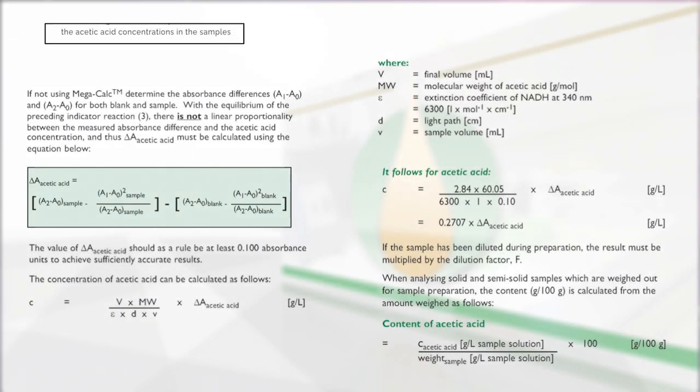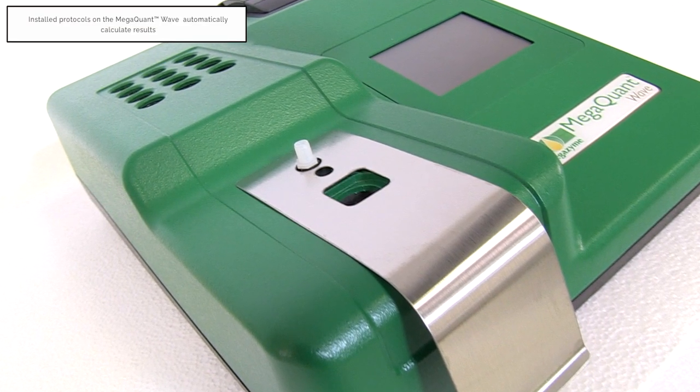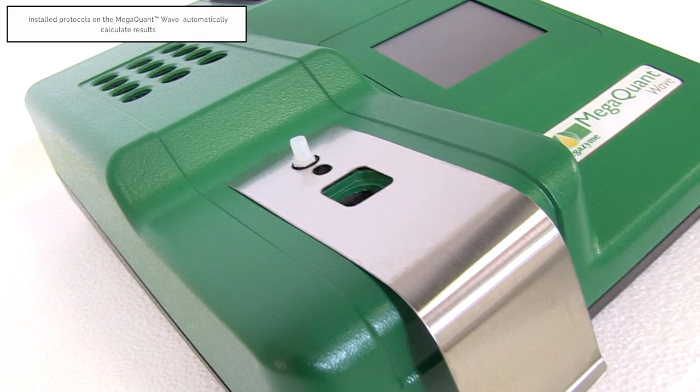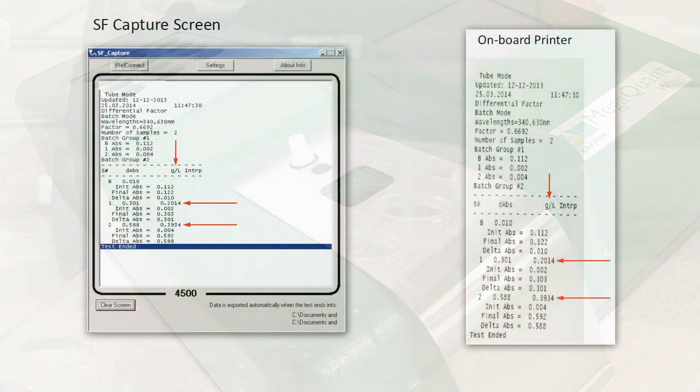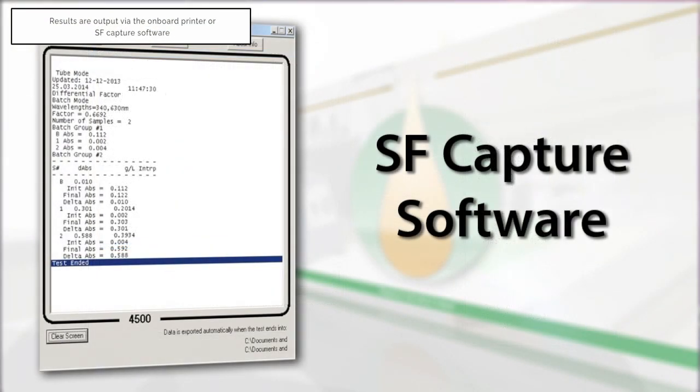The absorbance readings A0, A1, and A2 of the sample and blank reactions are used to calculate the acetic acid concentrations in the original samples. When performing this test using the pre-installed protocol on the MegaQuant wave spectrophotometer, the results will be automatically calculated and printed via the onboard printer. Or the data can be exported to a computer using the SFCapture software.